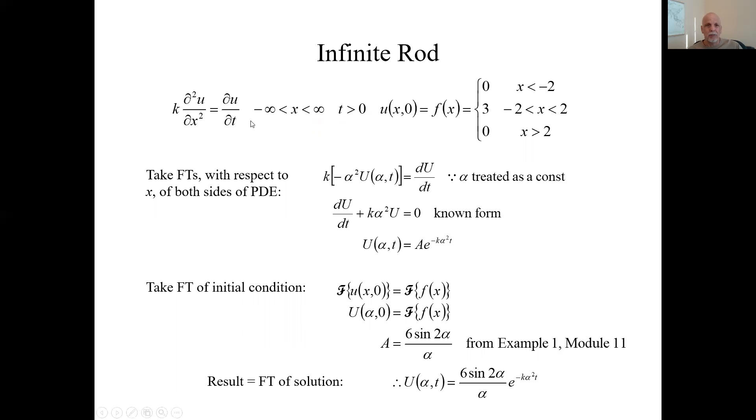But for positive time. Here's the partial differential equation itself. Here is an initial condition. It says at time zero, the infinite rod has certain heat. It's described by this function, constant from minus two to two, and zero everywhere else. So what does that heat do in this rod as time goes on?